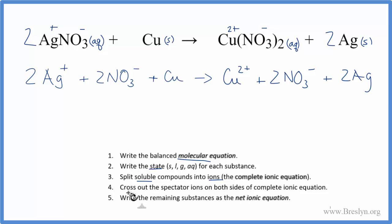So at this point, we can cross out the spectator ions. These are the ions that appear on both sides of the equation. The only thing that's the exact same on both sides are these two nitrate ions. Everything else is different. We have the silver ion here. Over here, it's solid silver, so those are different. Here we have the solid copper. This is an ion.